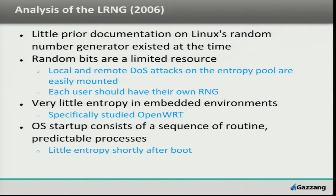Looking at the history: six years ago, there was a white paper called the Analysis of the Linux Random Number Generator, 2006. The conclusions from that paper: number one, there was very little prior documentation of the Linux random number generator at the time. The authors — students at a university in Europe — basically said they reverse engineered the random number generator because the documentation in the kernel code was just that bad. They had to read the code, see the outputs, and instrument it to tell how it was gathering its entropy.